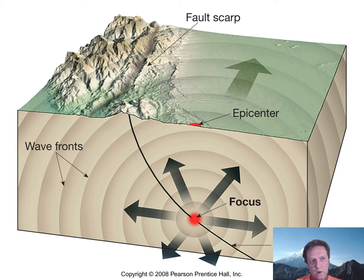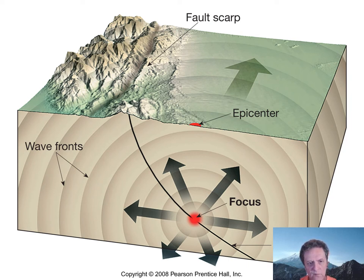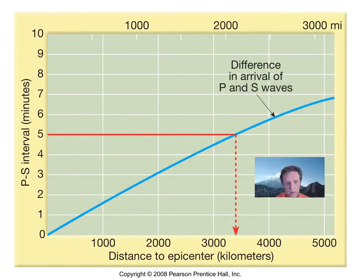All hazards relate back to seismic wave energy. When a fault breaks, it creates energy emanating through the rock. The point on the fault at which the earthquake occurs is called a focus or hypocenter. The point on the Earth's surface directly above it is called the epicenter.